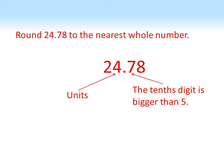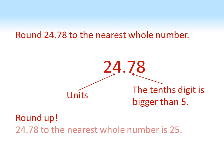So 24.78 is closer to 25 than it is to 24, so to the nearest whole number we get 25.